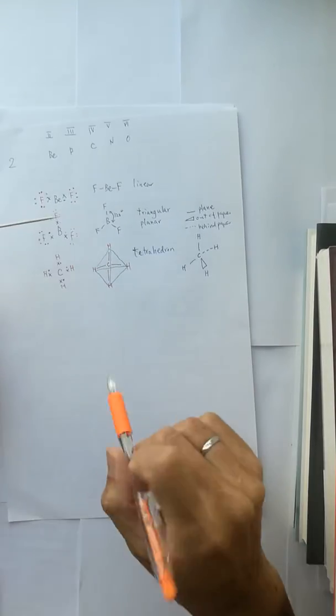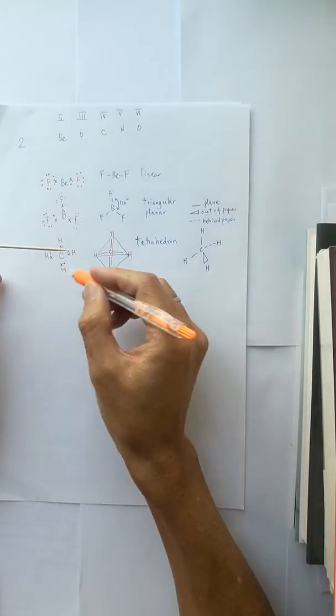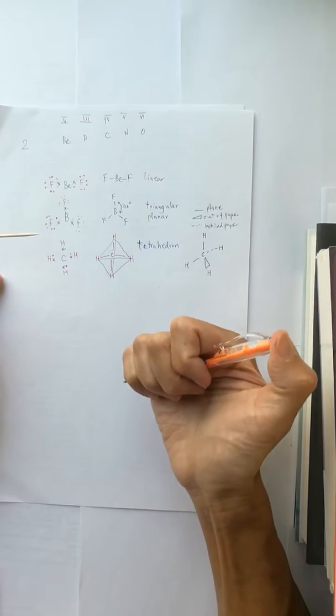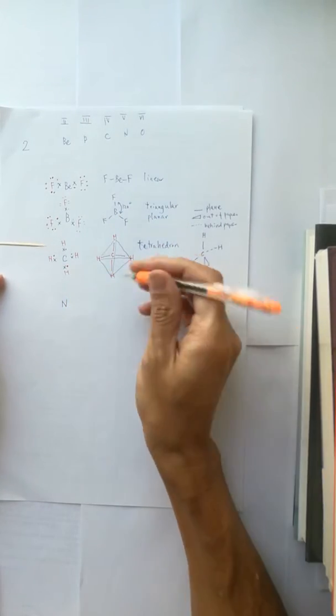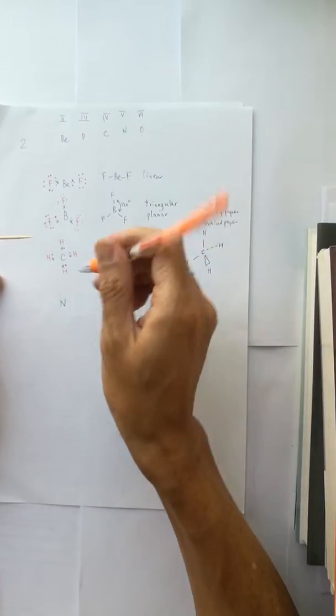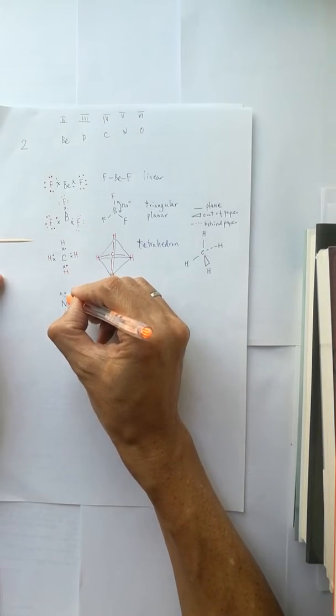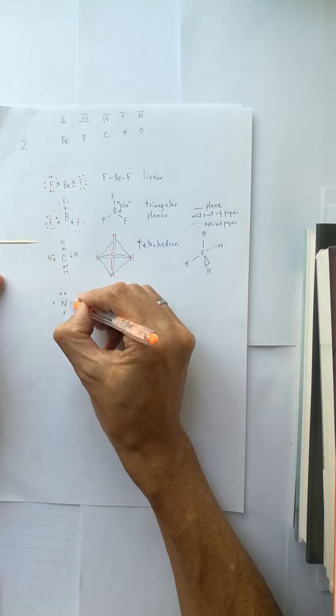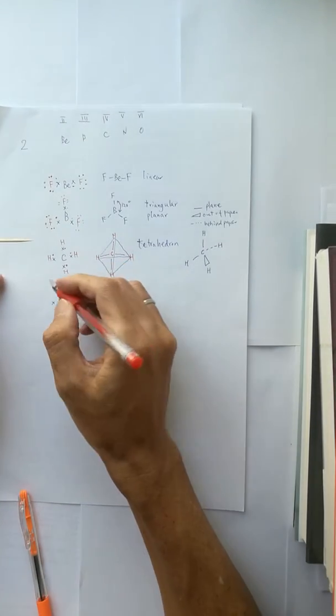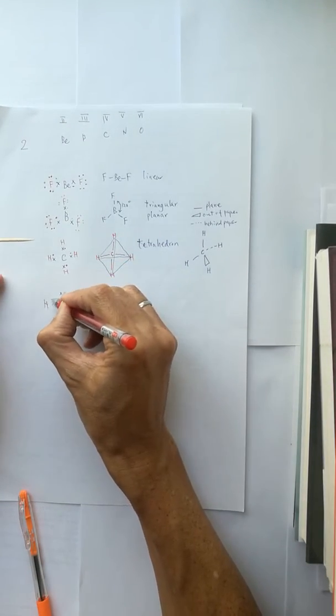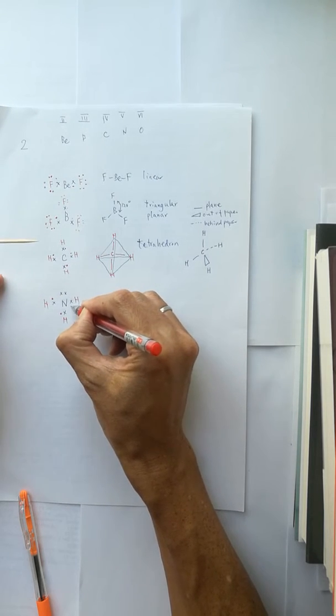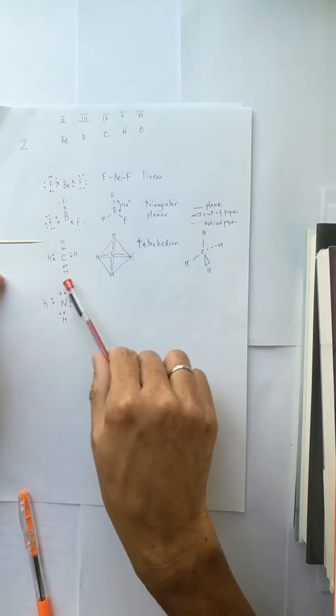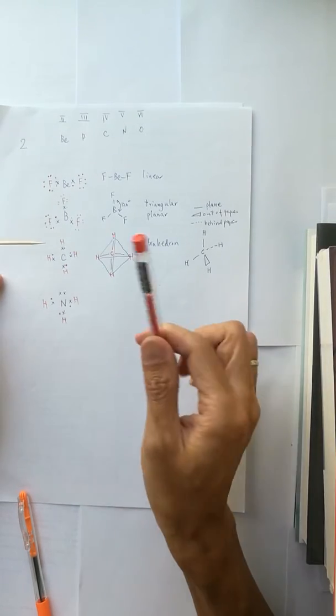Now we move on to nitrogen. Nitrogen is in group 5, so I have five outer shell electrons. Now we could add H atoms, and we have 3 H such that nitrogen becomes octet.